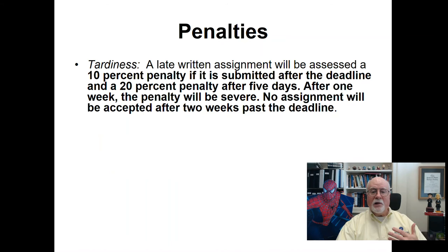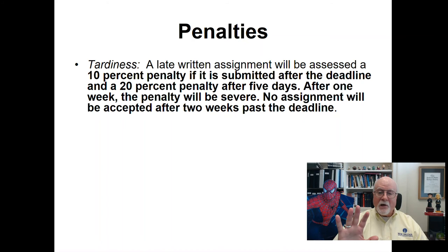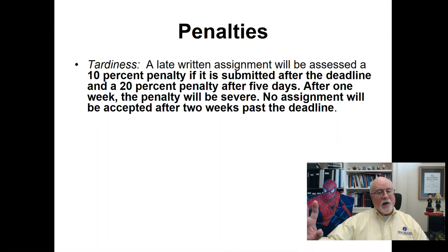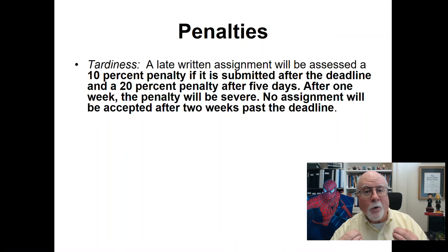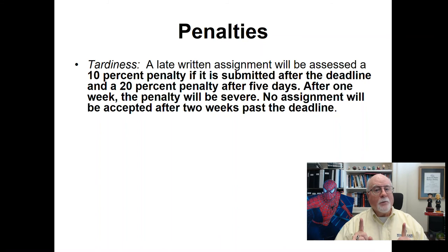Regarding promptness with written assignments: a 10% penalty applies if submitted after the deadline, and a 20% penalty after five days. For a book review worth 60 points, that's a 6-point penalty at 10%, or 12 points at 20% after the following Saturday. After one week, the penalty is severe — so severe I cannot even speak the words. No assignment will be accepted beyond two weeks past the deadline. I am a wonderful, loving, caring person, but I am very particular about promptness with written assignments, so please work ahead and get your assignments in on time.